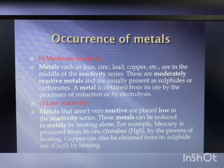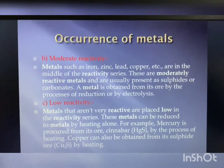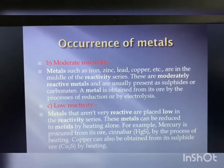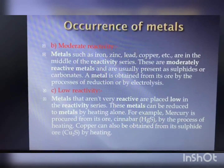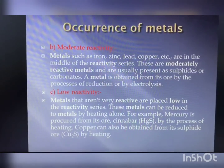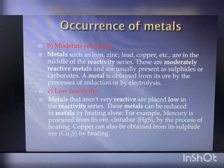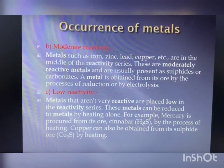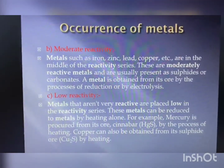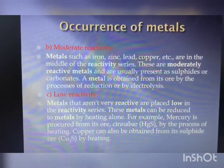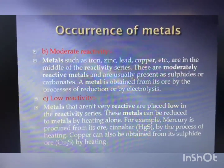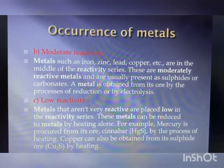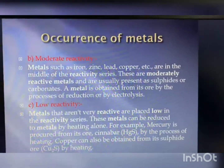The metal oxides are then reduced to the corresponding metals by using a suitable reducing agent such as carbon. Besides carbon, displacement reactions can also be used. Highly reactive metals such as sodium, calcium, and aluminum are used as reducing agents because they can displace metals of lower reactivity from their compounds.